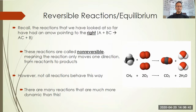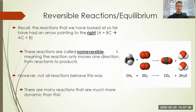So far we've talked about reactions and the rates of reactions and the types of things that tend to speed up chemical reactions. The reactions we've looked at so far have had an arrow pointing to the right — something like A + BC produces AC + B. Those reactions are called non-reversible reactions, meaning the reaction only moves in one direction from reactants to products. The products don't break down and start to form reactants once they've been produced.